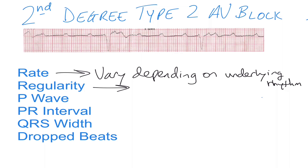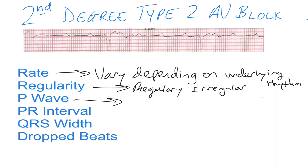The rhythm itself is regularly irregular. All that is saying is that the rhythm is irregular due to the pattern it's showing, but that pattern marches out regularly — so it repeats itself. Thus: regularly irregular.